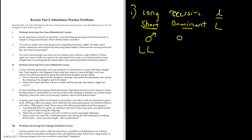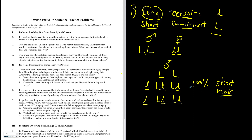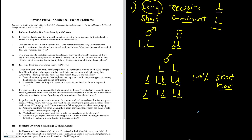The male is crossed with a female whose phenotype is long hair. Because long hair is recessive, she must be homozygous recessive (ll). Setting up the Punnett square with LL crossed with ll gives all heterozygous offspring (Ll), so 100% of the kittens will be short haired.